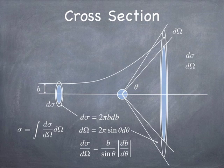that d-sigma d-omega is simply b divided by the sine of theta times the absolute value of db d-theta. Now, it's absolute value only because, as I said, as b gets bigger, theta gets smaller, so the derivative db d-theta is typically a negative number. But we want to think in absolute terms, so d-sigma d-omega is usually positive, so we take the absolute value. That's the idea.